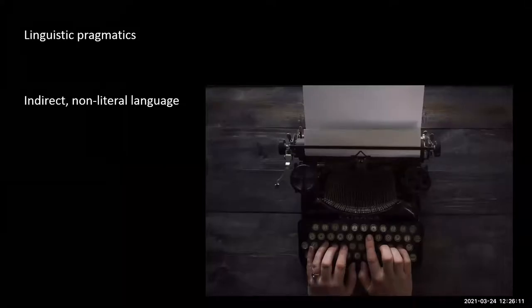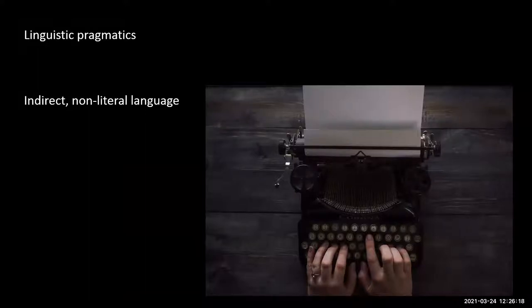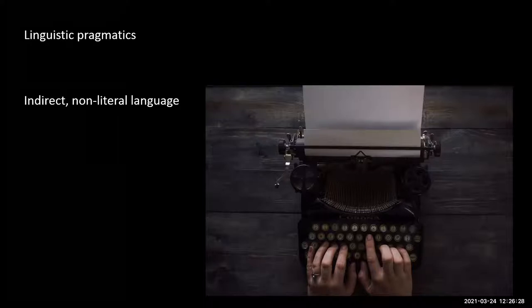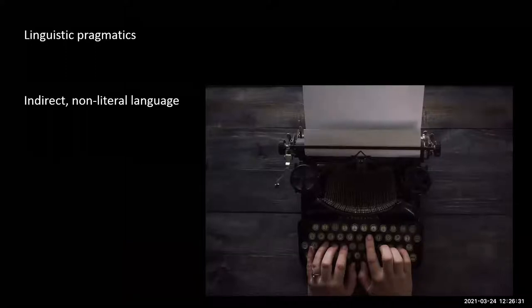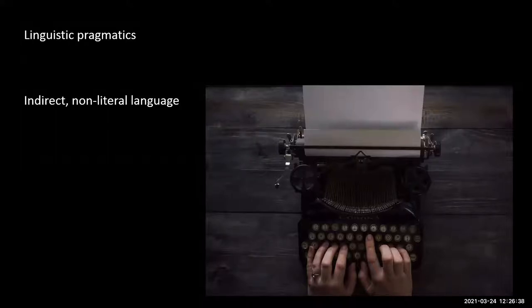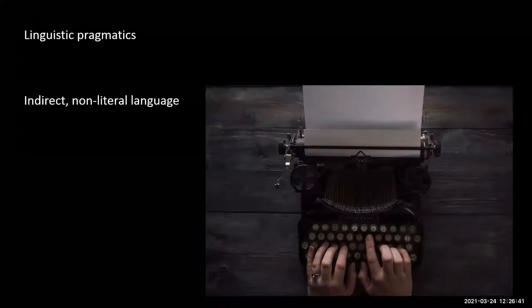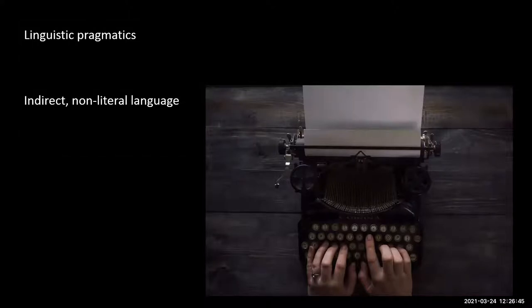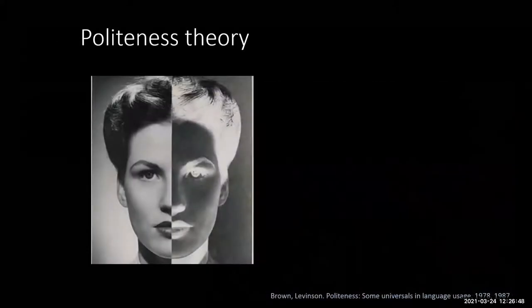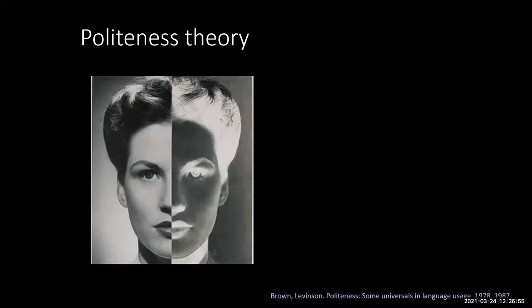To understand how people make sense of language, we started looking at a branch of linguistics called pragmatics, which deals with indirect, non-literal language — things like irony, sarcasm, and metaphor — where to understand it you need to know who's speaking to whom, for what purpose, what their body language or tone of voice is. What's interesting is that's usually missing in written comments.